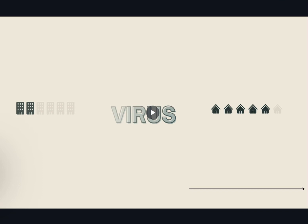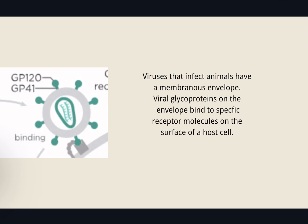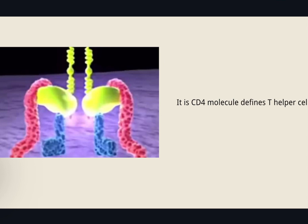Now we may wonder how it works. Let's take HIV as an example. HIV will lead to acquired immunodeficiency syndrome, which we call AIDS. Viruses that infect animals have a membrane envelope. Viral glycoproteins on the envelope bind to specific receptor molecules on the surface of a host cell. HIV enters cells by recognizing the CD4 receptor.